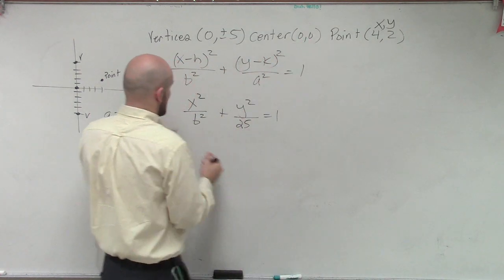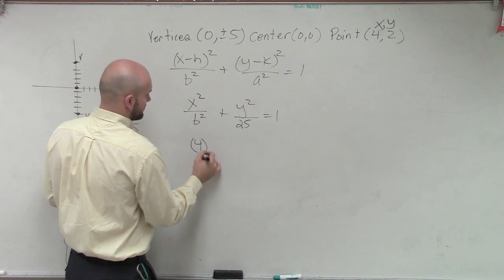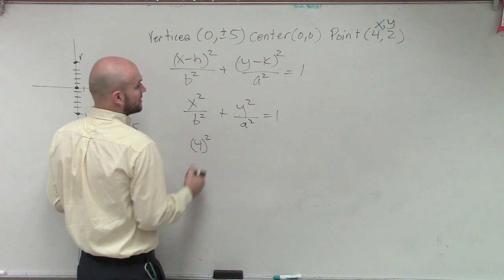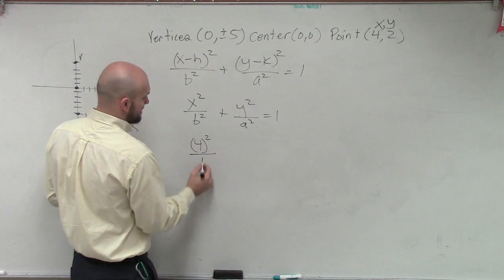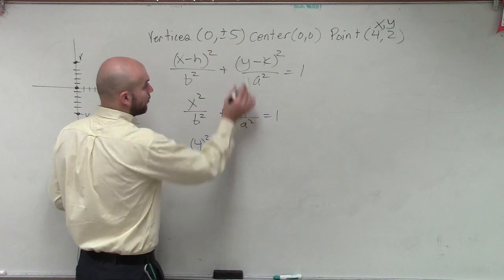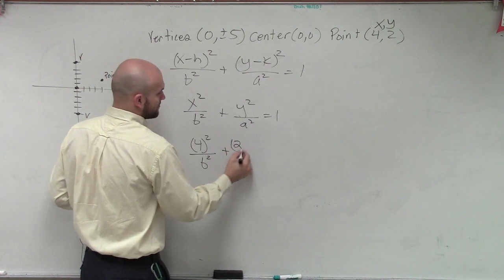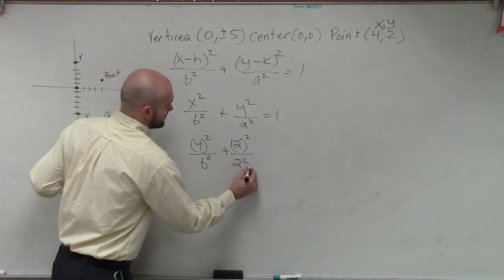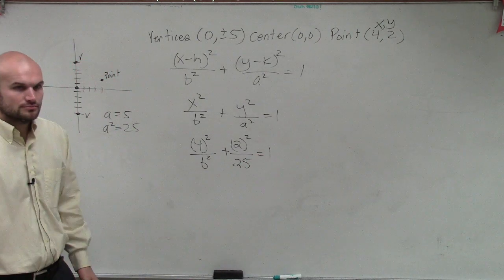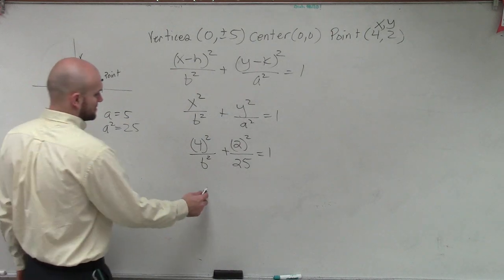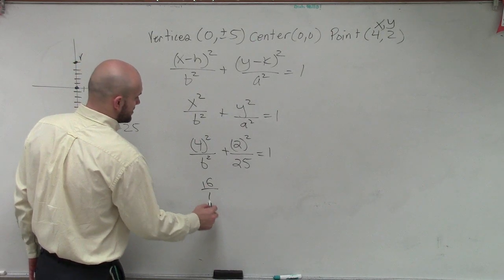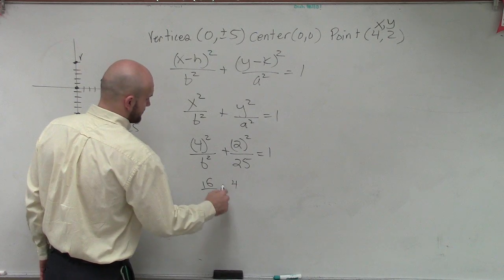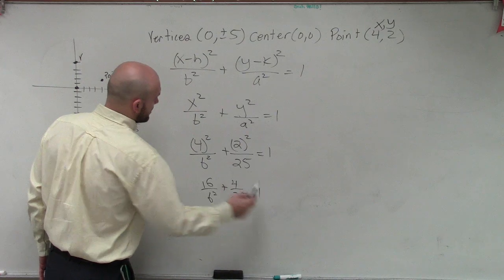But if they give you one point that's on the ellipse, we can use that to help us find our other values. So what we're going to use is, we're going to say, all right, four is going to be x squared. Actually, I'll just keep that up with the premise in a second. So we'll say four equals x squared divided by b squared, which we do not know, plus y squared, which we'll say is two, and then we said a squared, which is 25, equals one. Now we've got to do a little mathematics. Sixteen over b squared equals four, I'm sorry, plus four over 25 equals one.